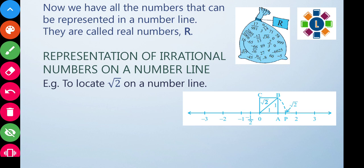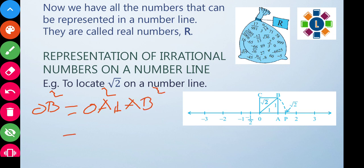We have a right triangle OAB. Applying the Pythagorean theorem: OB squared equals OA squared plus AB squared. OA is one unit so OA squared is one; AB is one unit so AB squared is one. Therefore OB squared equals one plus one equals two.